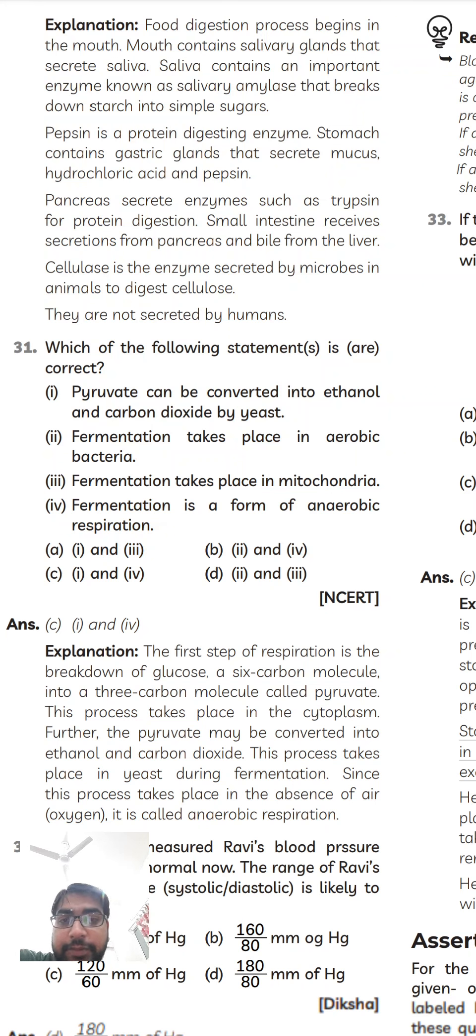In physics and science classes. Question number 30 already done, question number 31: which form of fermentation is correct? First option, pyruvate can be converted into ethanol and carbon dioxide. Fermentation takes place in anaerobic bacteria. Fermentation takes place in mitochondria. Fermentation is a form of anaerobic respiration. Definitely correct, first and fourth is correct.